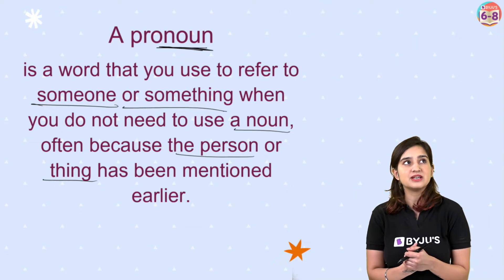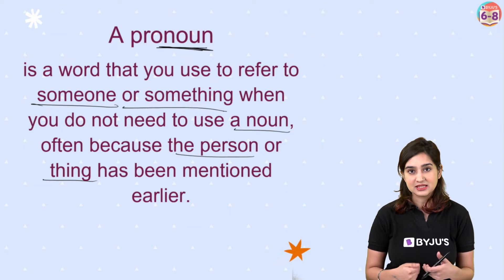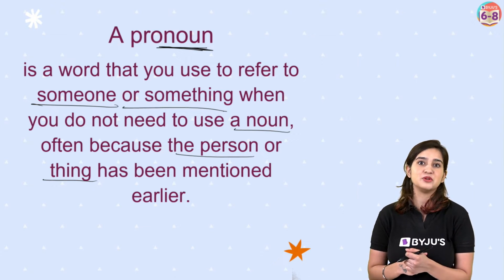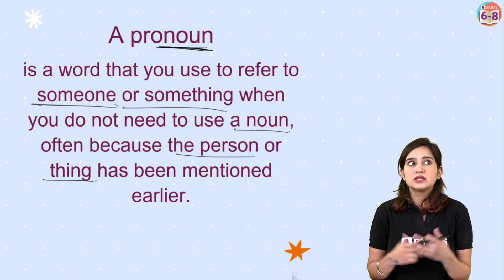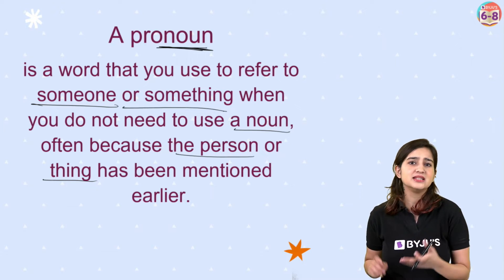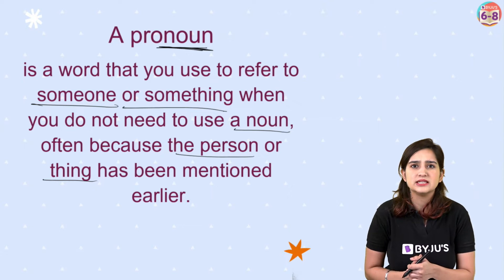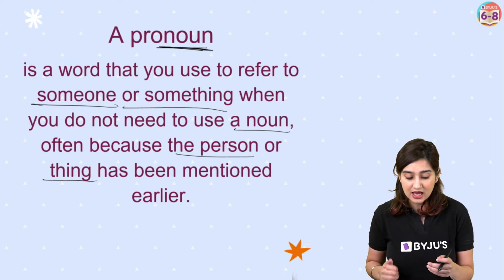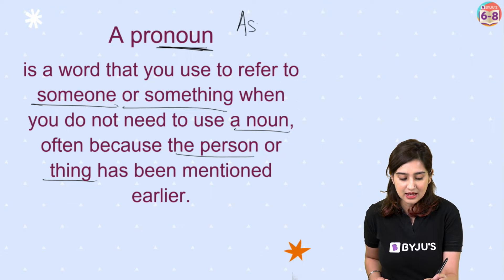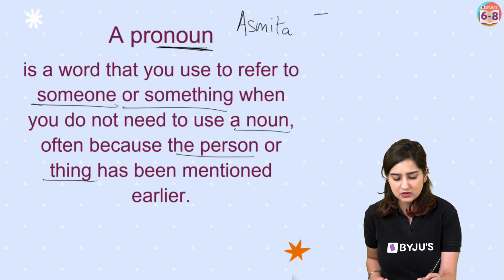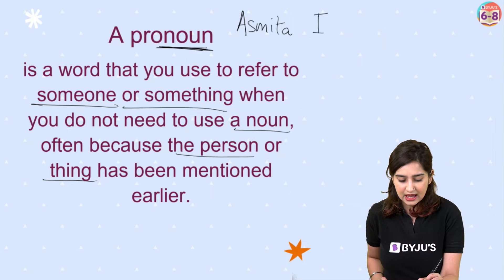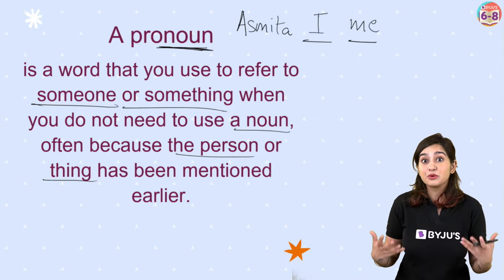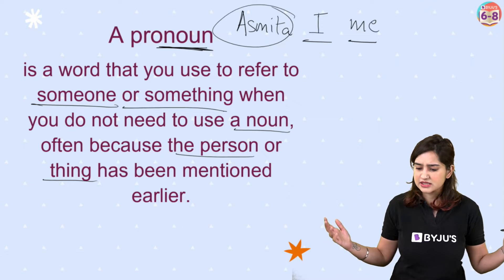For example, if I say: hi, my name is Asmita. Asmita teaches English. Asmita is very happy to be here with you today. I hope you are happy to be here with Asmita as well. Kitni baar mein Asmita, Asmita, Asmita, Asmita — it sounds odd, right? Instead I can say: hi, my name is Asmita. I teach English. I am very happy to be here. Hope you are happy to be here with me as well. So I replaced 'Asmita' the noun with 'I' and then once with 'me'. Both I and me are pronouns replacing the noun Asmita.